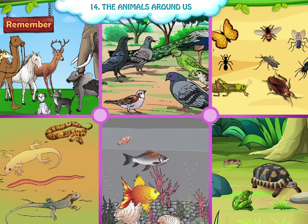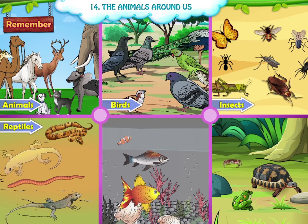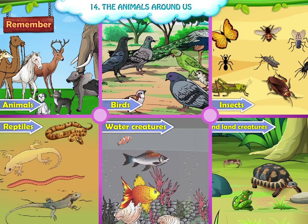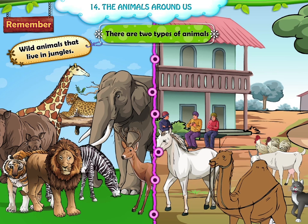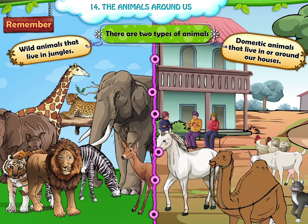Remember, there are various kinds of creatures around us. They are animals, birds, insects, reptiles, water creatures and water and land creatures. There are two types of animals: wild animals that live in the jungles, and domestic animals that live in or around our houses.